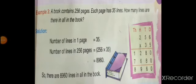Example 3. A book contains 256 pages. It means number of pages in 1 book is equal to 256. Each page has 35 lines. It means number of lines in 1 page is equal to 35. How many lines are there in all in the book?